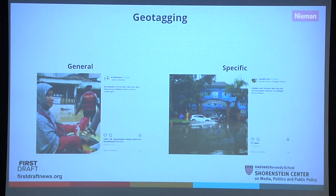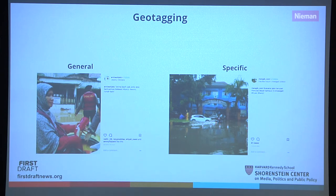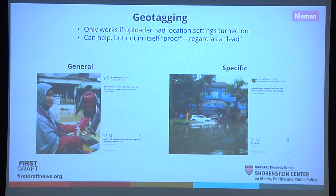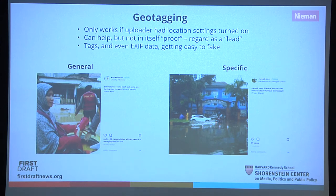Fewer than 5% of people using Twitter now have geolocation set on their phone — people got smarter about not wanting to be tracked. So when someone says they are somewhere, especially on Instagram, they can be anywhere. Geotagging only works if the person has settings turned on and selects it — it can help, but it's not proof. EXIF data is the information that travels with a photo until it's uploaded to a social platform — once uploaded, all of that information is stripped. We're working with platforms to have that information continue on, which would make journalists' lives easier, but EXIF data can also be manipulated.